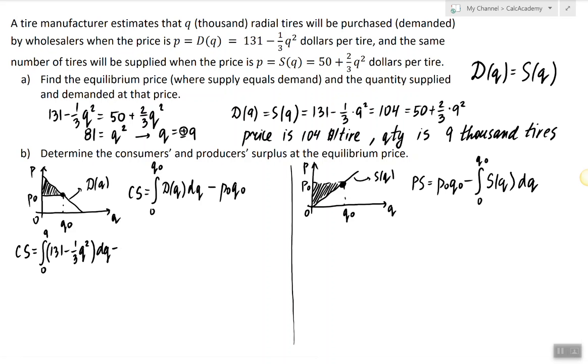So here we have 104 times 9. And producer surplus will be equal to 104 times 9 minus the integral from 0 to 9 and this time we put the supply curve which is 50 plus two-thirds q squared dq. And let's find these integrals.